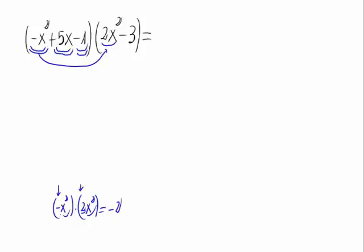And now, let's multiply the monomial, the x. That is x squared times x squared, x to the fourth. So we would have minus 2x to the fourth.